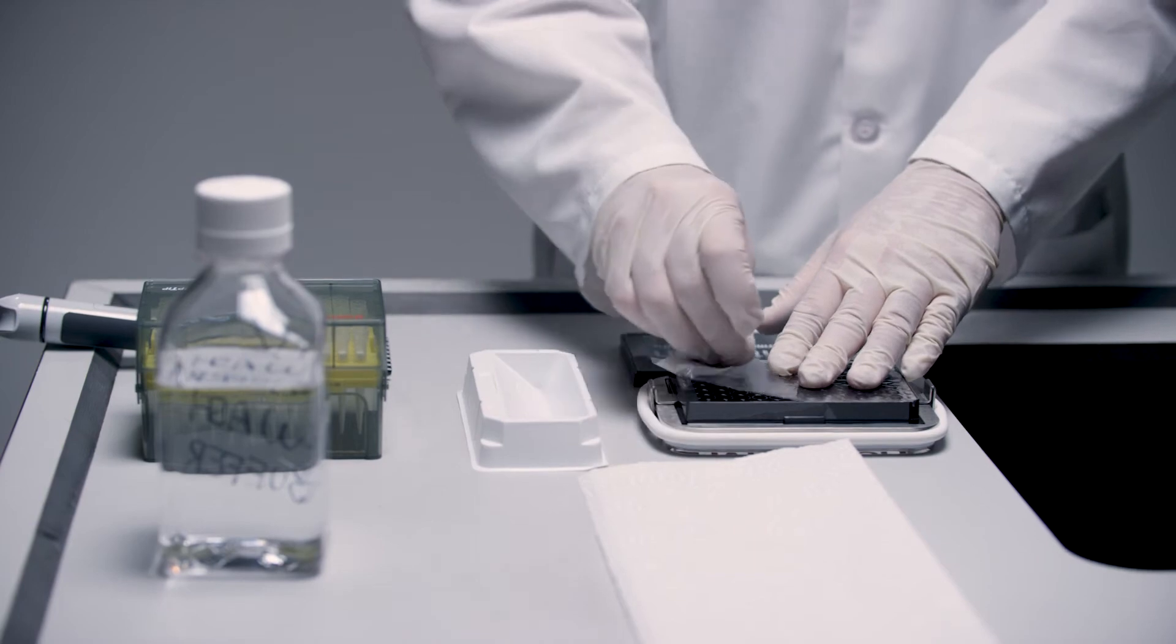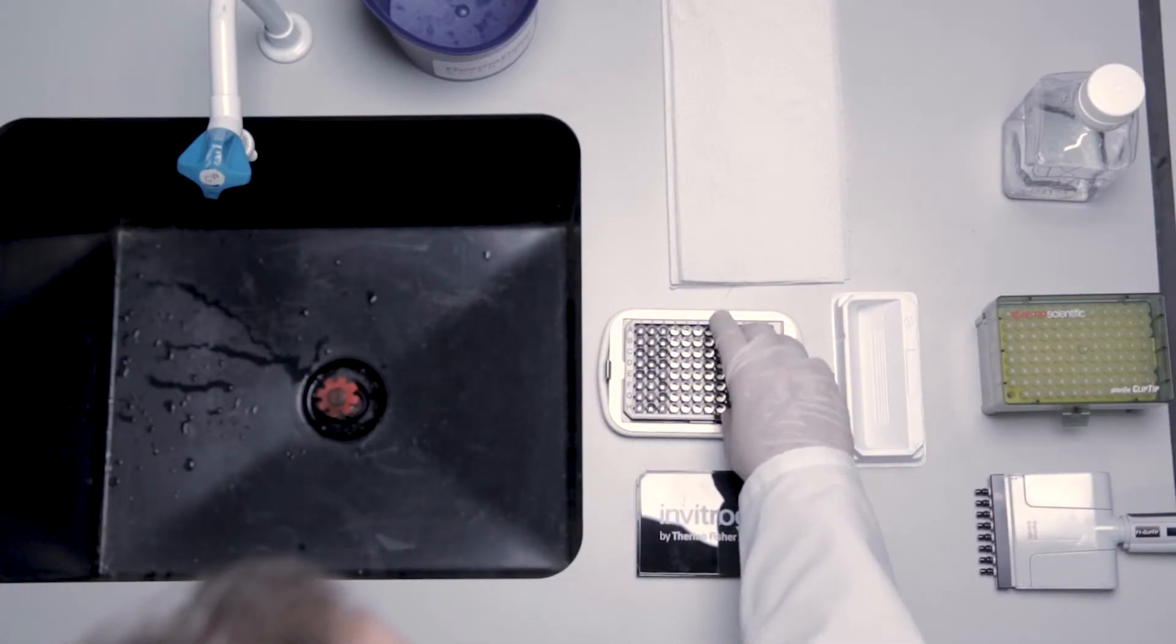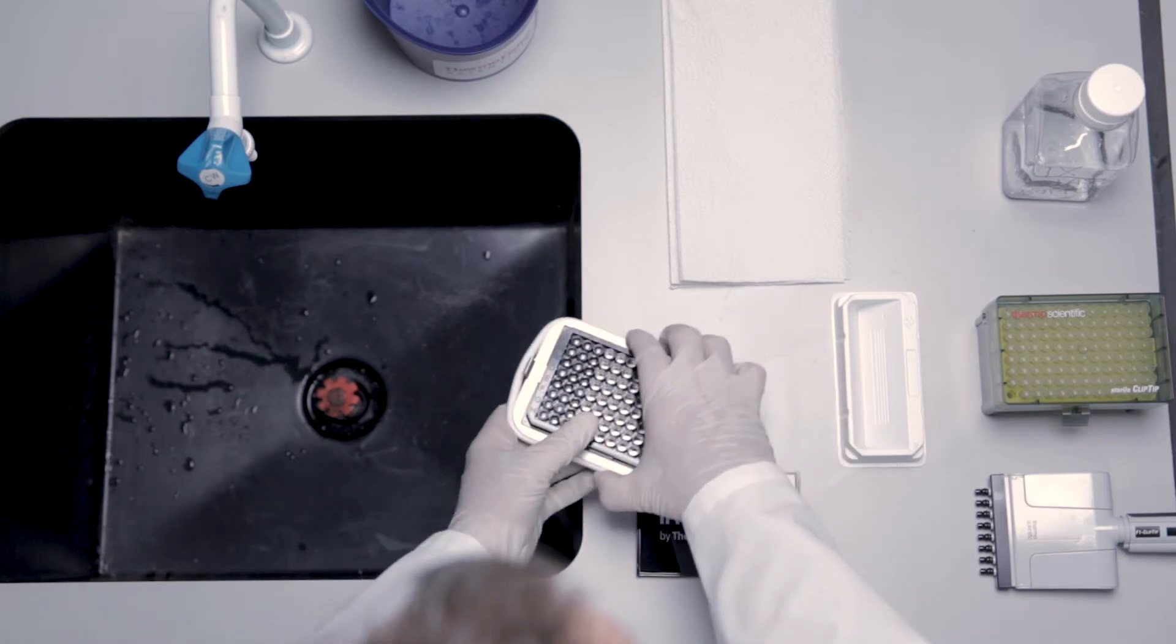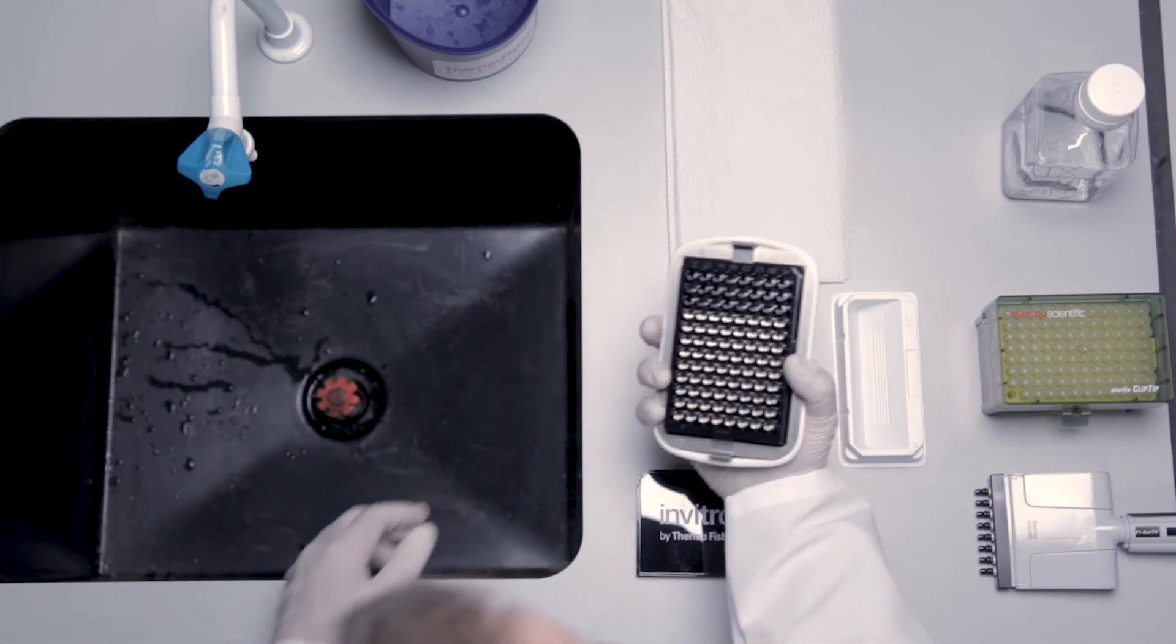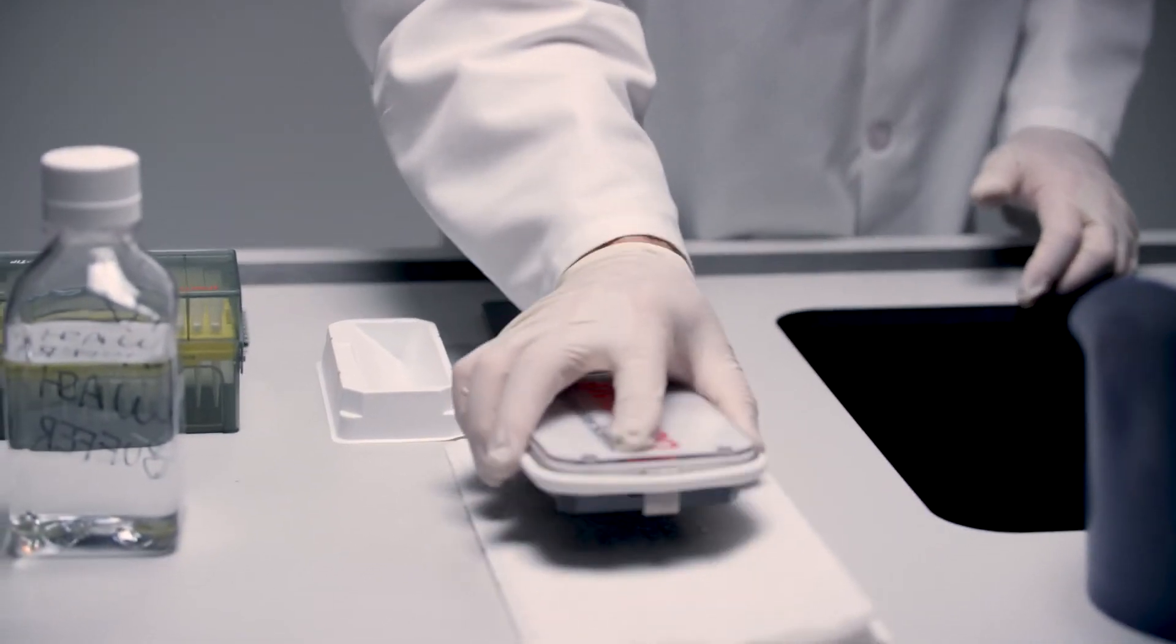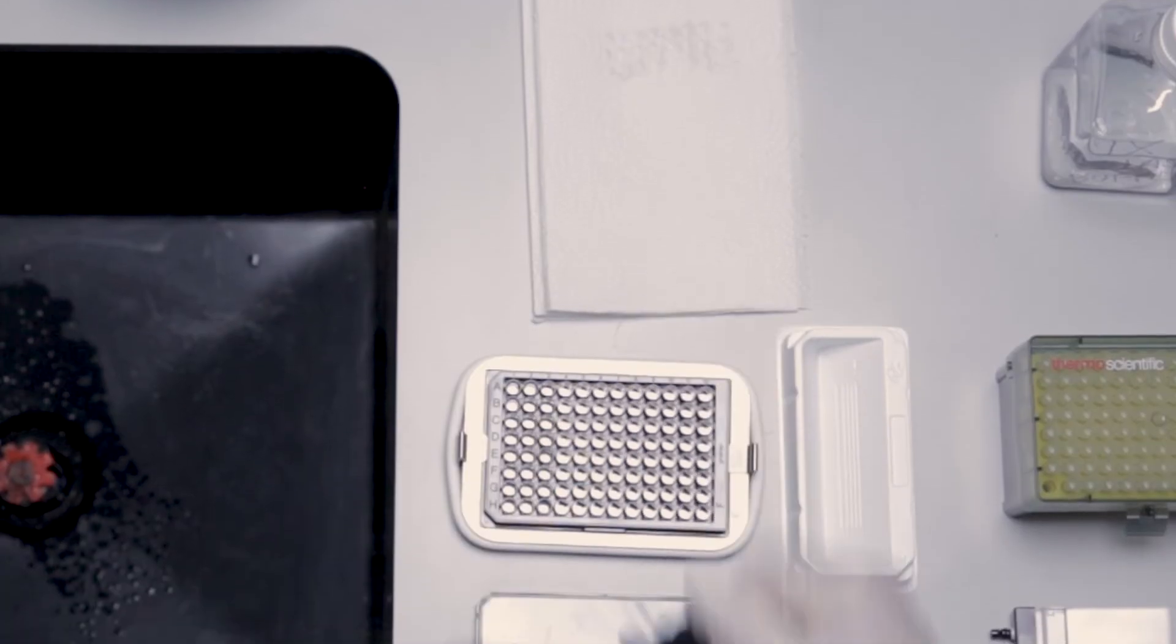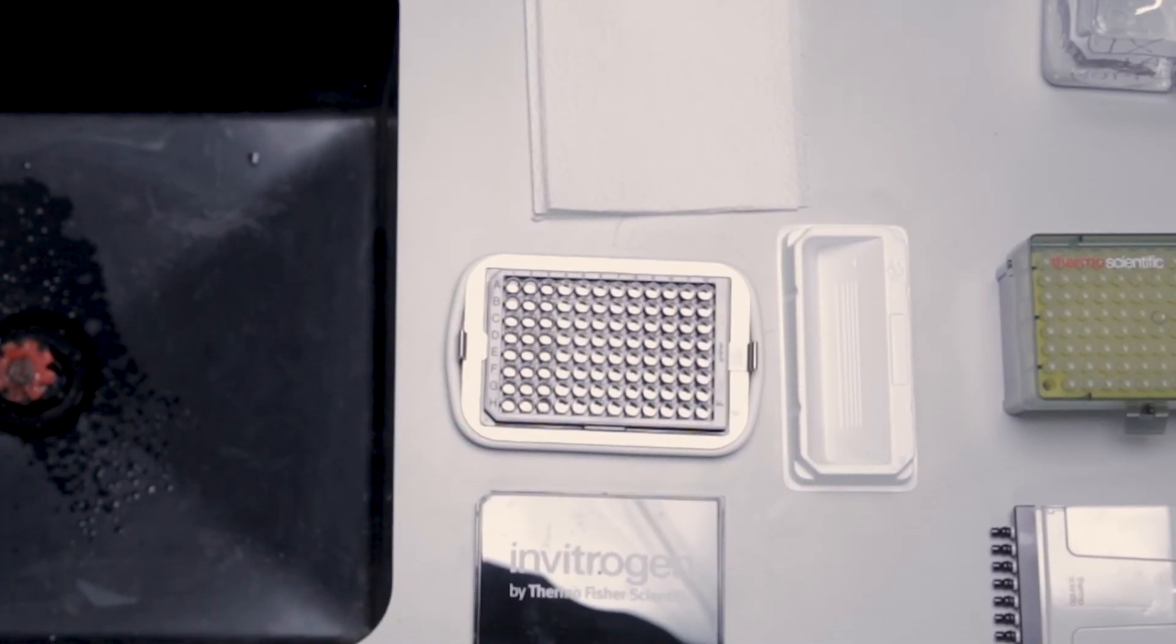To remove the liquid from the plate, remove the seal from the plate and take the handheld magnetic plate washer with the inserted plate and quickly invert with force over a sink or an appropriate waste container. Blot the inverted assembly onto several layers of paper towels or another absorbent surface to remove any residual solution.